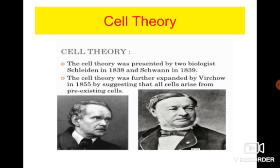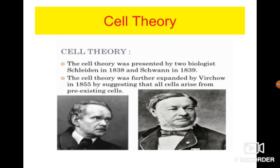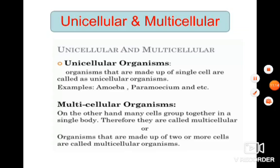Next came the cell theory, proposed by two scientists: Schleiden in 1838 and Schwann in 1839. According to them, all living bodies are made out of cells, and these bodies are made out of either a single cell (unicellular) or many cells (multicellular organisms).